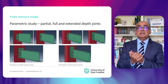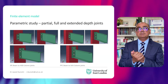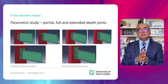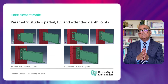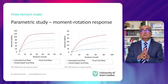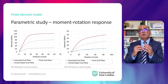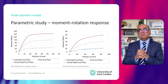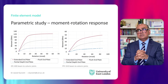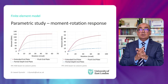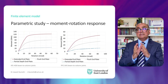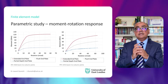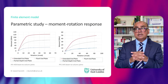It is now time for the parametric study, where we use partial, full, and extended depth joints. The first joint type is IPE to HEB joints, and the second is PFC to SHS joints — joint detailing is as per Eurocode 3. Moment-rotation behavior of these two types of joints — IPE to HEB and PFC to SHS — is shown here. The solid line is for the extended end plate joint, the dotted line is for the flush plate joint, and the dashed line is for the partial depth joint.